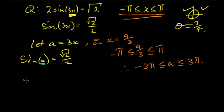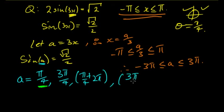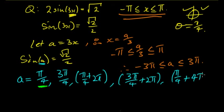Solving for a, we get a = π/4 and a = 3π/4, plus or minus 2π for either of these. First I check the larger positive values. Starting with the smaller value: π/4 + 2π — is that still within the range? It's less than 3π so it's fine. Then 3π/4 + 2π — still within 3π, yes. Then π/4 + 4π: since 4π + π/4 is greater than 3π, it's outside the range.